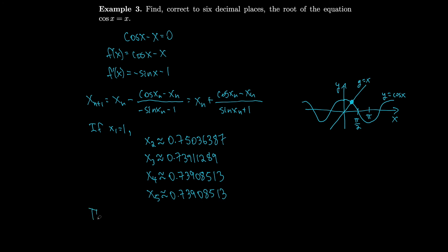And then x₅ is about 0.73908513. So we could say that the root, which is accurate to eight decimal places but we only needed six, will be 0.739085.